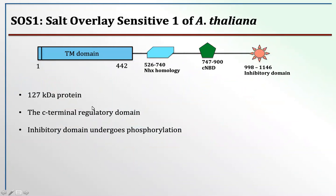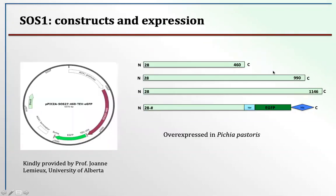I took up the work of expressing SOS1. SOS1 consists of two domains: the transmembrane domain and a big C-terminal domain. The big C-terminal domain consists of several subdomains. The distal C-terminal domain is the auto-inhibitory domain that undergoes phosphorylation and dephosphorylation. Once phosphorylated, the protein is active and working as a sodium-proton antiporter. Once dephosphorylated, the protein stops working. To express this protein, I took three different constructs.